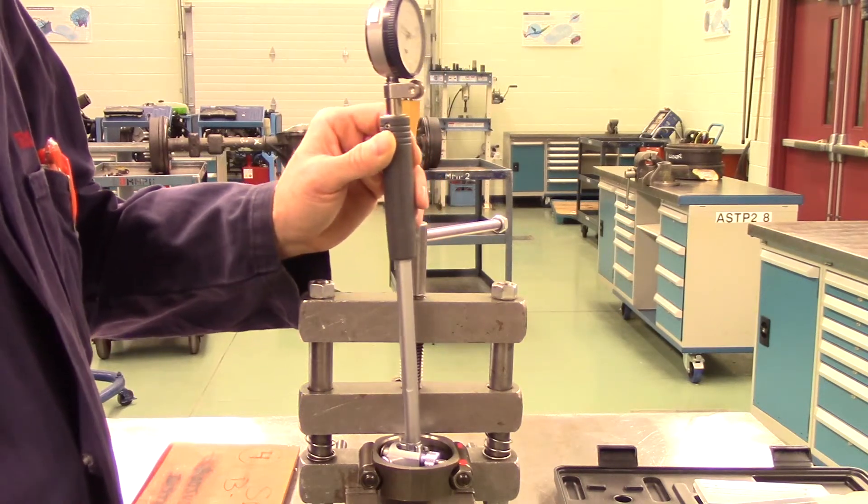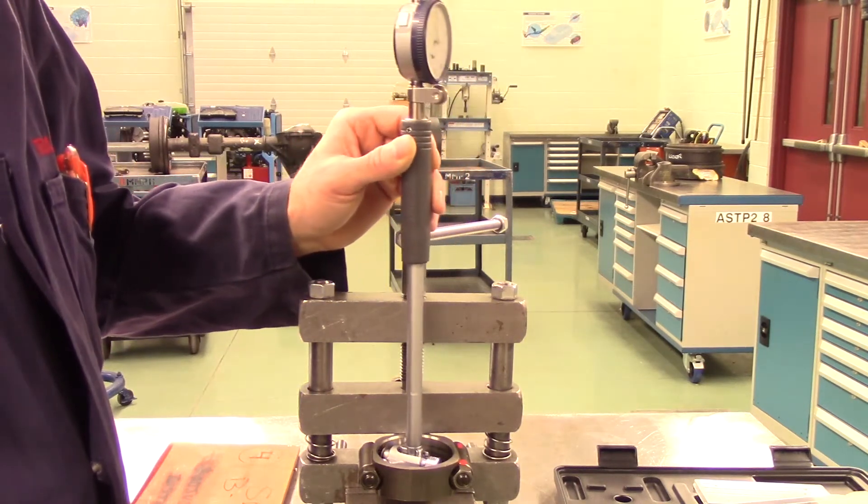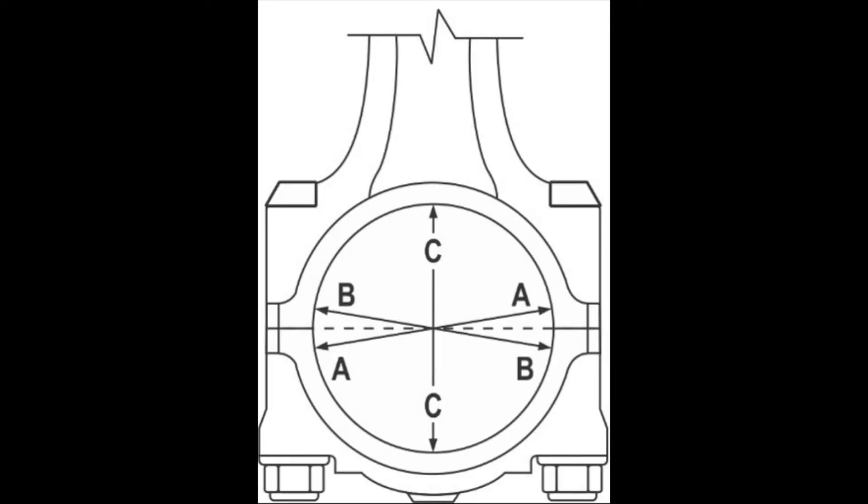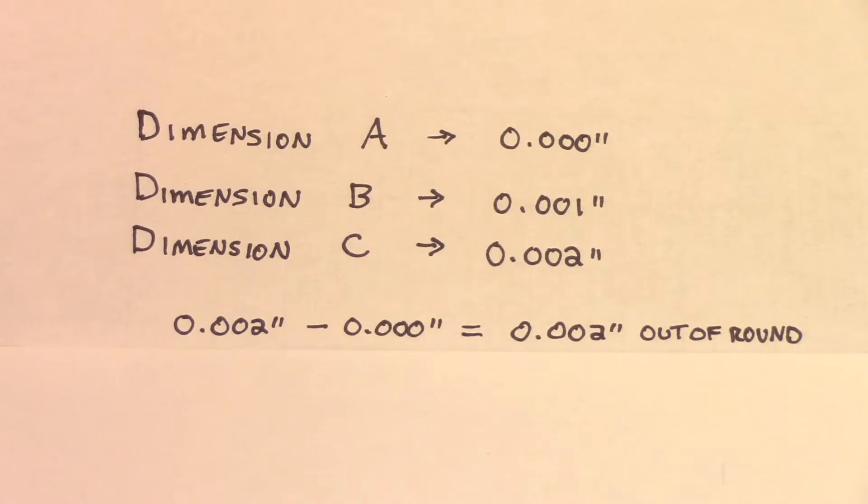Once the dial bore gauge is zeroed, we can start measuring for out of round. We will measure the bore in three separate places as indicated by the diagram. Remember to not measure near the parting line. Record your results. Subtract the smallest dimension from the largest dimension to determine out of round. In this example, our three readings were zero, one thousandths of an inch, and two thousandths of an inch. The difference between the smallest and largest measurement is two thousandths of an inch. This is how much out of round this bore has.